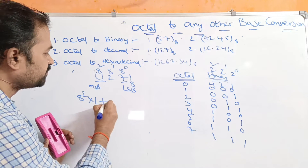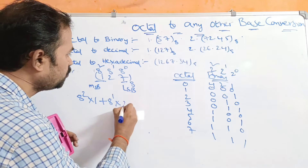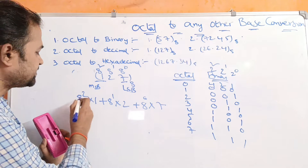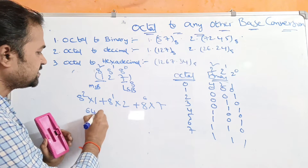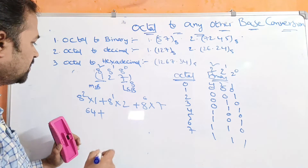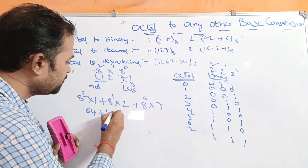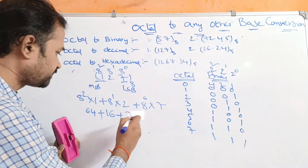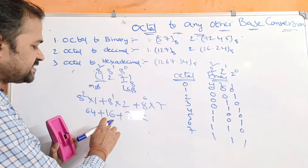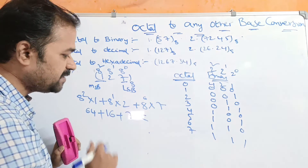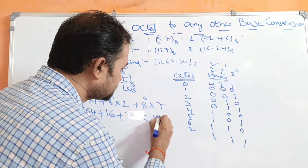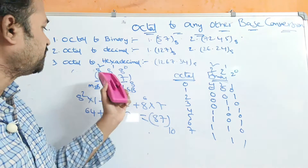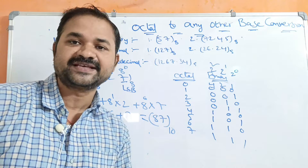Let us solve the first problem: 127 base 8. We perform: 8² × 1 + 8¹ × 2 + 8⁰ × 7. That gives 64 × 1 = 64, 8 × 2 = 16, and 1 × 7 = 7. So 64 + 16 + 7 = 87. The decimal equivalent is 87 base 10.